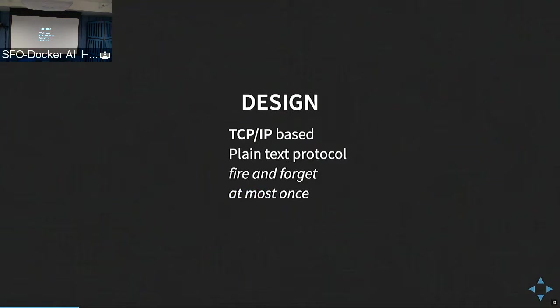The core of the NATS design is that it uses TCP/IP to maintain an always-established connection to the server. Over this always-established connection, you use a very simple plain text protocol with a few number of commands. It is a fire-and-forget system — in order for a message to reach a subscriber, it has to be connected at the moment the server is routing that message. In terms of delivery guarantees, you could say it's at-most-once delivery.